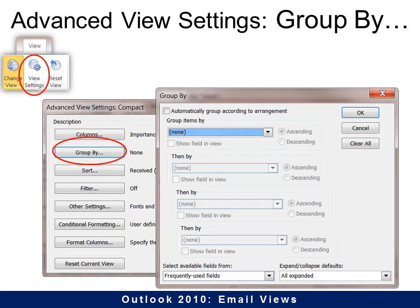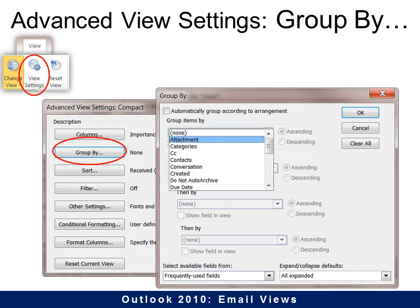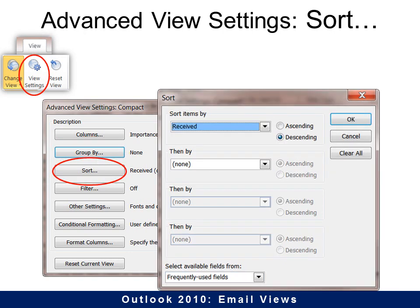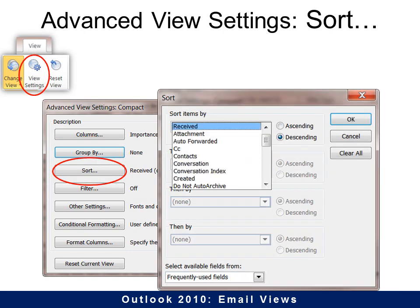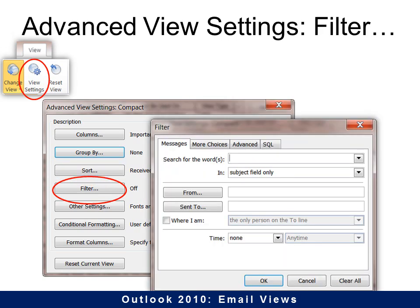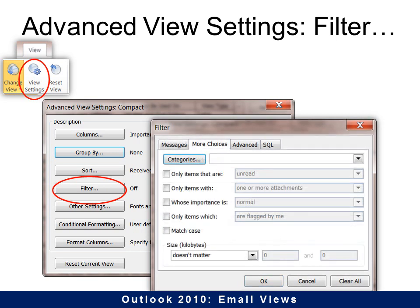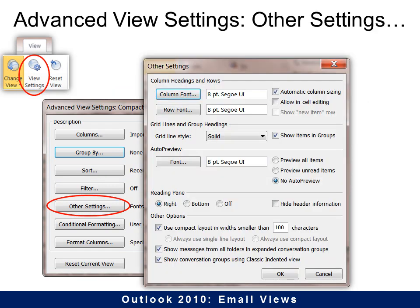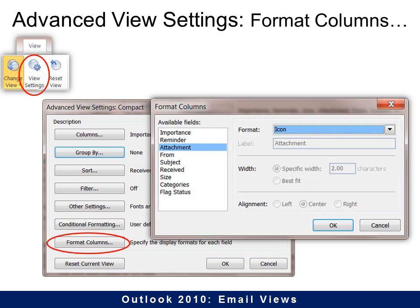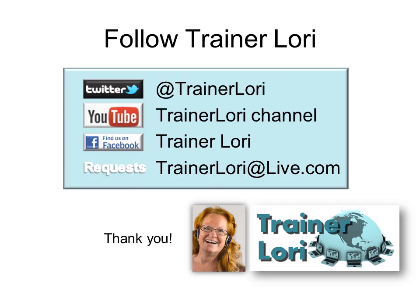Some other options include Group By — you can see the options in there. Next is Sort, so you can have it pre-sorted for you. Then Filter, so if you get hundreds of emails a day, you can filter to find just the ones from your boss or an important client. And Other Settings, and Format Columns — so you can change the formatting. That's all for this time. See you next time, thank you.